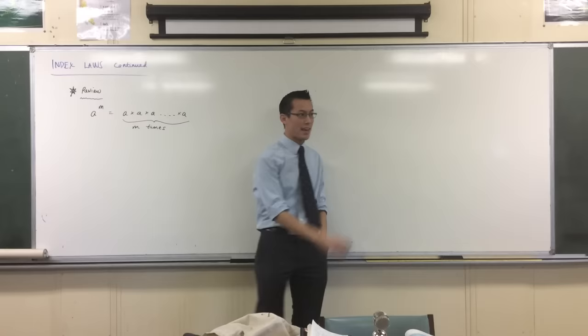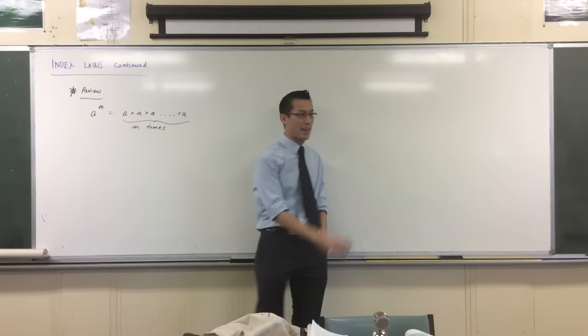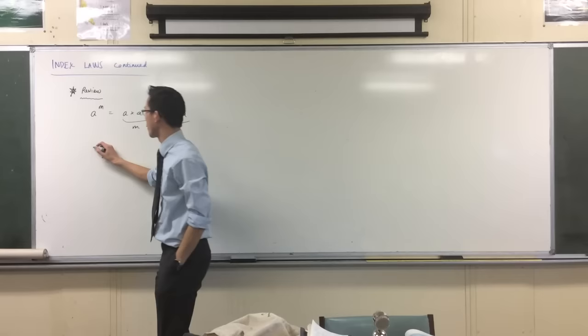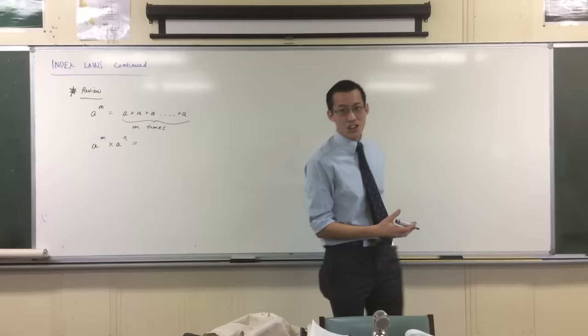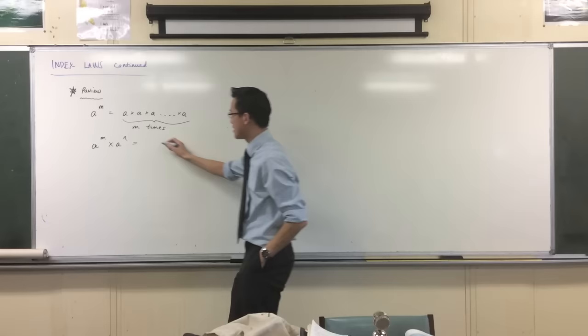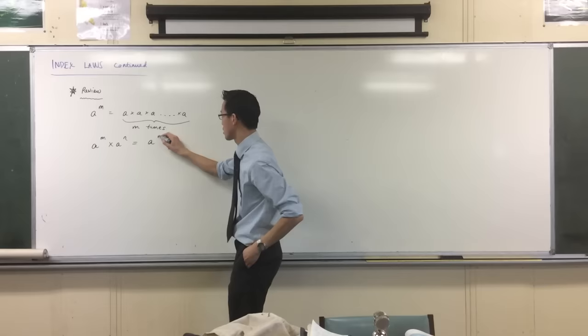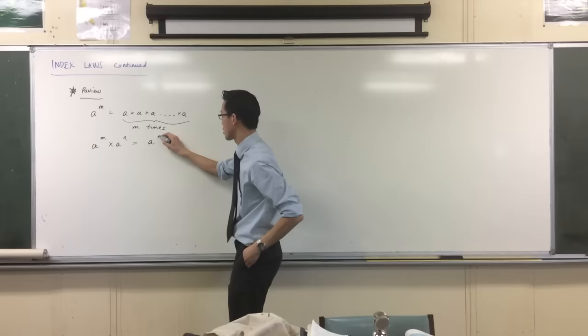So then we took this idea and we said, look, we can build on this. If you've got two numbers like this, a to the m and a to some other base, and if you multiply them by each other, you could rewrite it like this and count it up, but that took forever. Instead, we wrote down what we call an index law. It's equal to that base, and what's the power? What do you do? When you multiply, you add the indices. So it's m plus n.